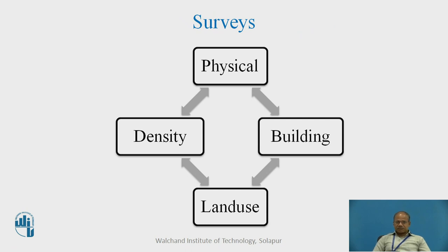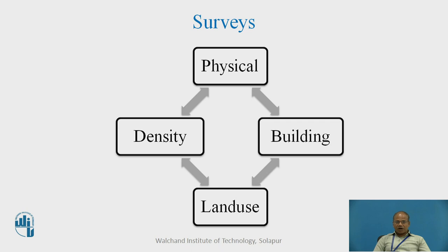Without data, planning is very hard. To make sure that data will be collected, we need to carry out certain surveys. There are primarily four important types of surveys carried out for urban planning. One is a physical survey — the land is surveyed to find out distances, elevations, angular positions, contours, topology, and even the boundaries.